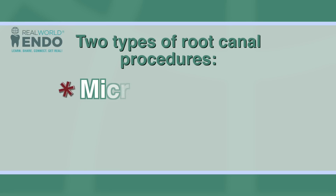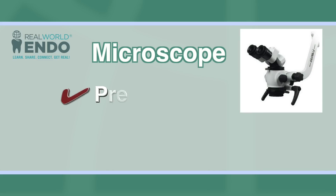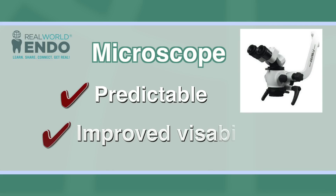The main reason is that there really are two different types of root canal procedures done in our profession. One is done microsurgically, and the other is done with the naked eye or with the aid of low power loops. There is really no question in my mind or any experienced endodontist's mind that the procedure done under the microscope is clearly more predictable, because you can see better and you only treat what you can see.